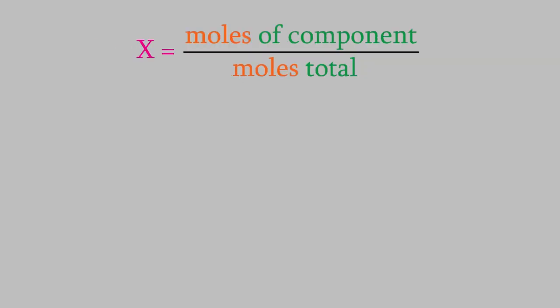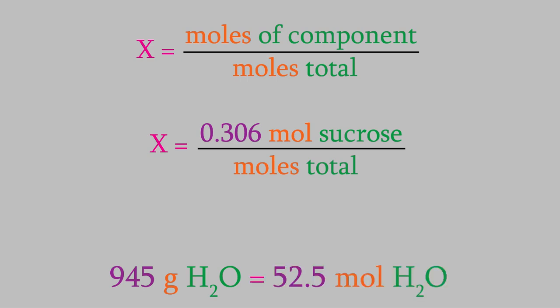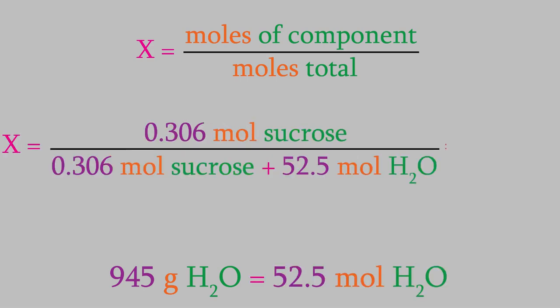Next, let's figure out the mole fraction of sucrose. We need the moles of sucrose on top and the total moles in the denominator. We've already figured out the moles of sucrose — it's 0.306. We have 945 grams of water, which using the periodic table gives us 52.5 moles. Plugging into the formula, the mole fraction of sucrose is 0.00580. Remember, the mole fraction doesn't have units.